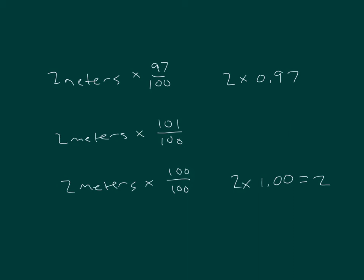2 times 0.97. Would that be more or less than 2? That would be less than 2. 2 times 1.01. That would be greater than 2.